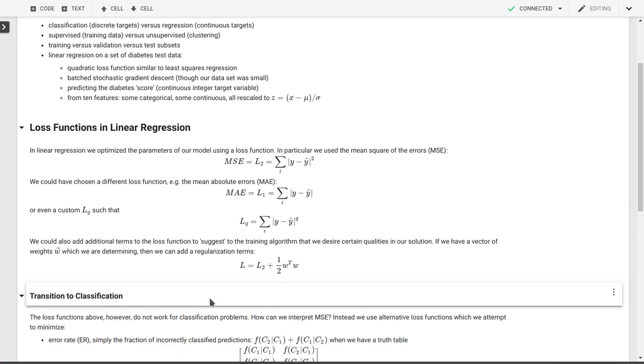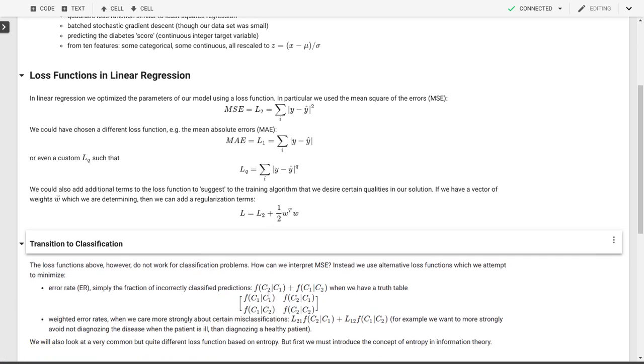However now that we're going to a classification problem in logistic regression let's see why this breaks down. This doesn't work for a classification problem because how would we interpret the mean squared error. What does it mean to talk about the square of the difference between an outcome of a cat and the outcome of a dog. There's no difference, there's no absolute value and there's no square that we can talk about. So instead we have to come up with different loss functions for classification problems.